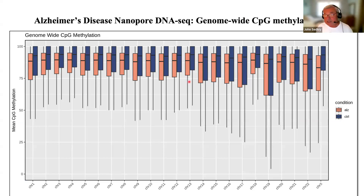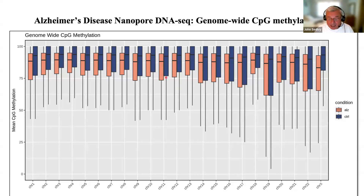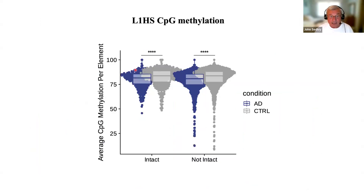Very quickly, for the last five minutes, I'm going to switch to Alzheimer's disease — leaving our favorite fibroblasts and continuing with the theme of DNA sequencing. Nanopore allows you to call methylation, and so we did that on brain specimens from the prefrontal cortex stratified by Braak stage. You can see that Alzheimer's brain is uniformly hypomethylated, and as you would probably predict, retrotransposons ride that wave of hypomethylation — these are the PAs, and finally here is our friend L1HS.